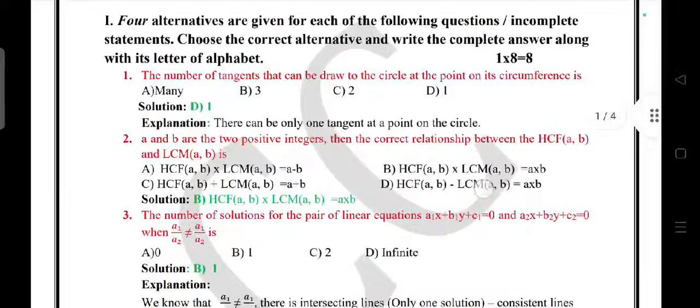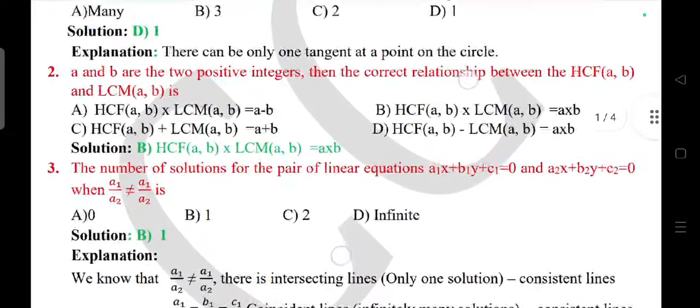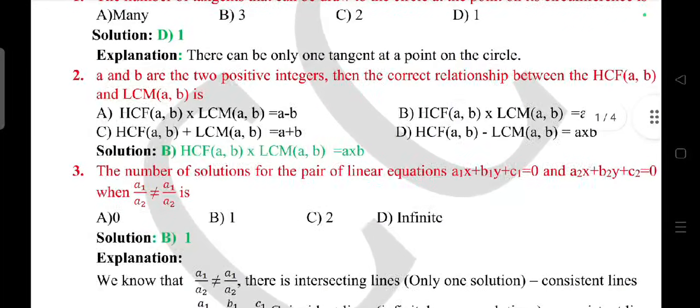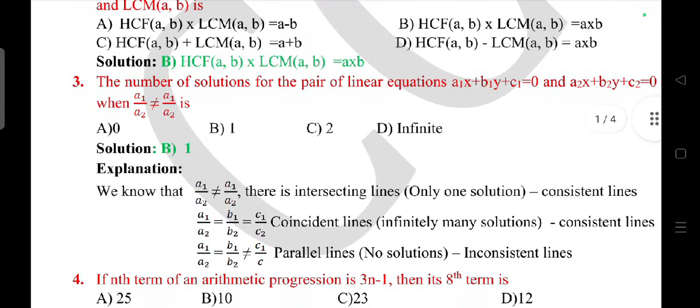First main: 8 multiple choice questions. The number of tangents that can be drawn to a circle at a point on its circumference is D, one. Second question: a and b are two positive integers, then the correct relationship between HCF of a and b and LCM of a and b is answer B. The number of solutions of a pair of linear equations is answer B, one.